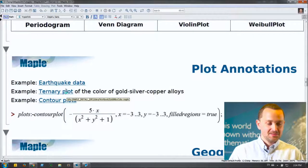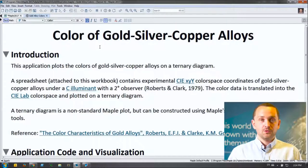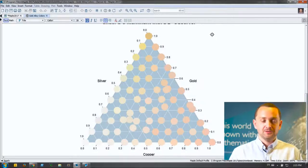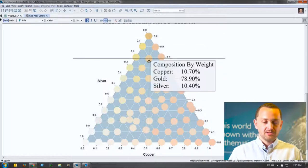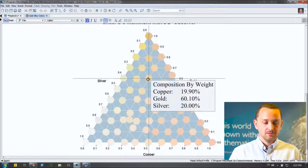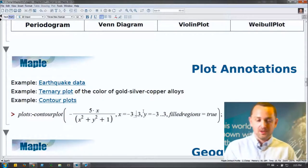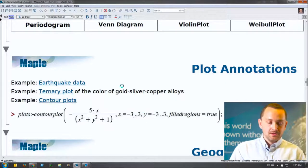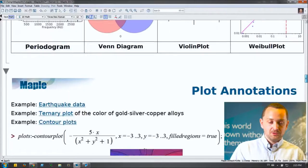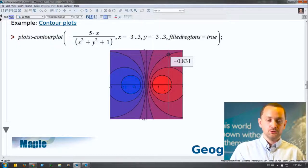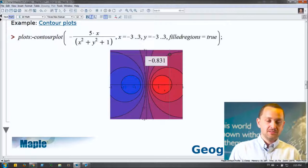Here's another plot — the color of gold, silver, and copper alloys displayed on a ternary plot. We can scroll through and see the composition by weight of gold, silver, and copper. The final example for plot annotations is one of the most requested: contour plots. Users have wanted to see what each contour line means. With plot annotations you can now hold your mouse over one of these lines and see the values of the contour lines — a feature that adds a lot of value to Maple.